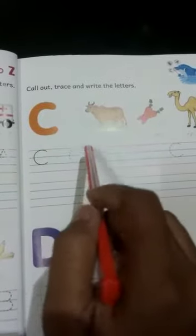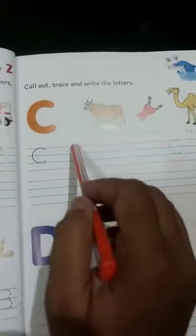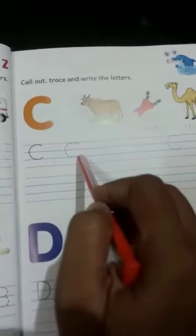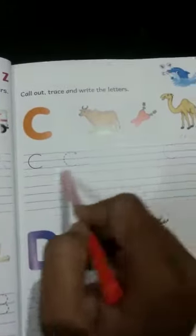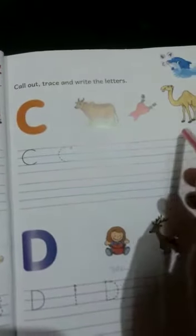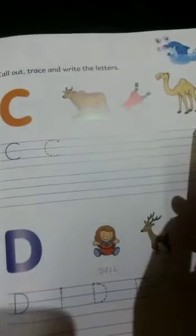And this is C, capital C. Now this is starting point. Towards the arrow, we can join the dotted line. C for Cow, C for Carrot and C for Camel.